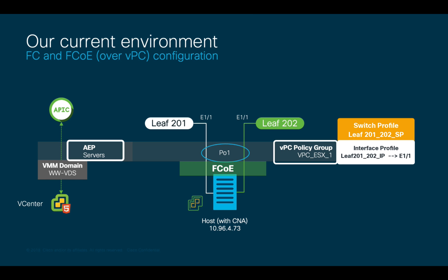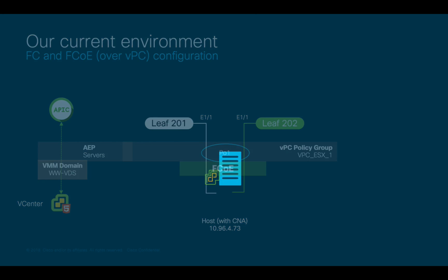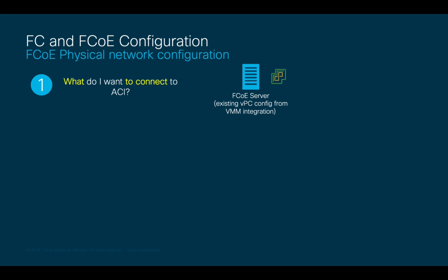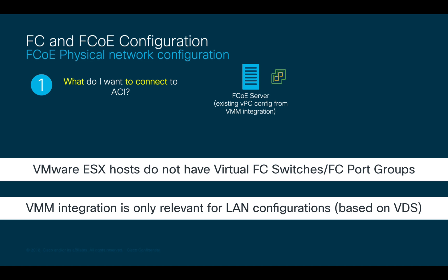Let's get started with our golden questions for our ESX server running FCoE. The first question is: what do I want to connect to ACI? The answer is I want to connect my VMware server using FCoE, leveraging its existing VPC connection. As you may know, VMware hosts do not have virtual Fiber Channel switches nor Fiber Channel port groups, so our VMM integration will not be used as part of this configuration.